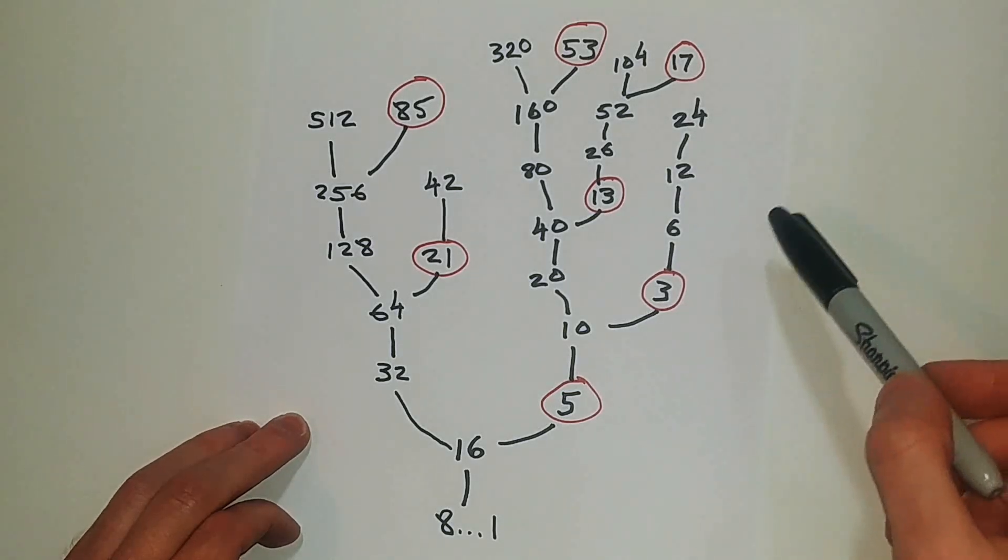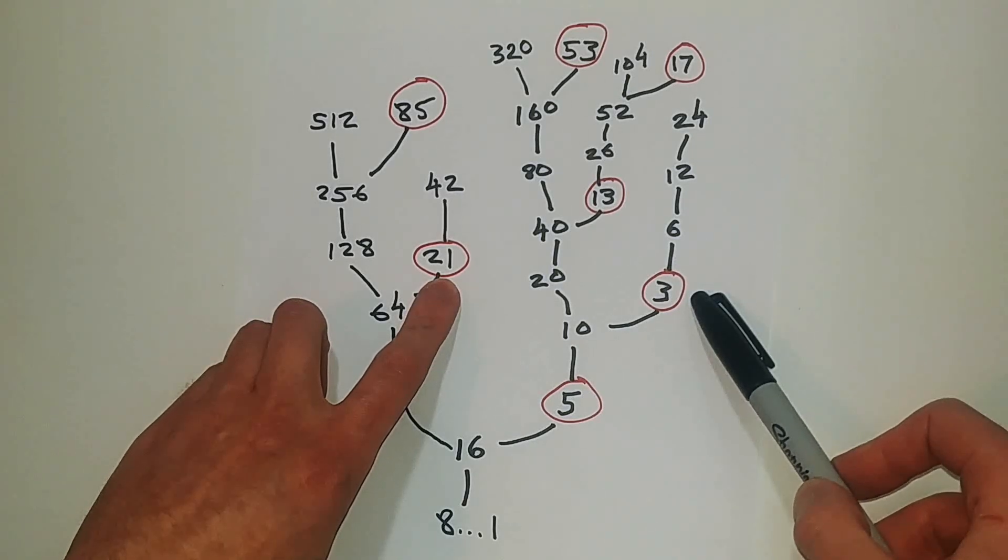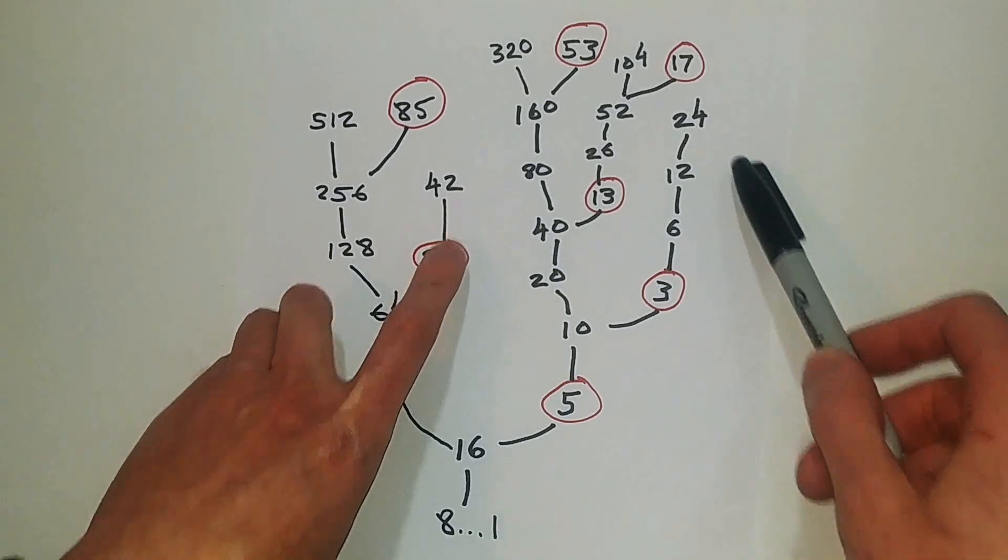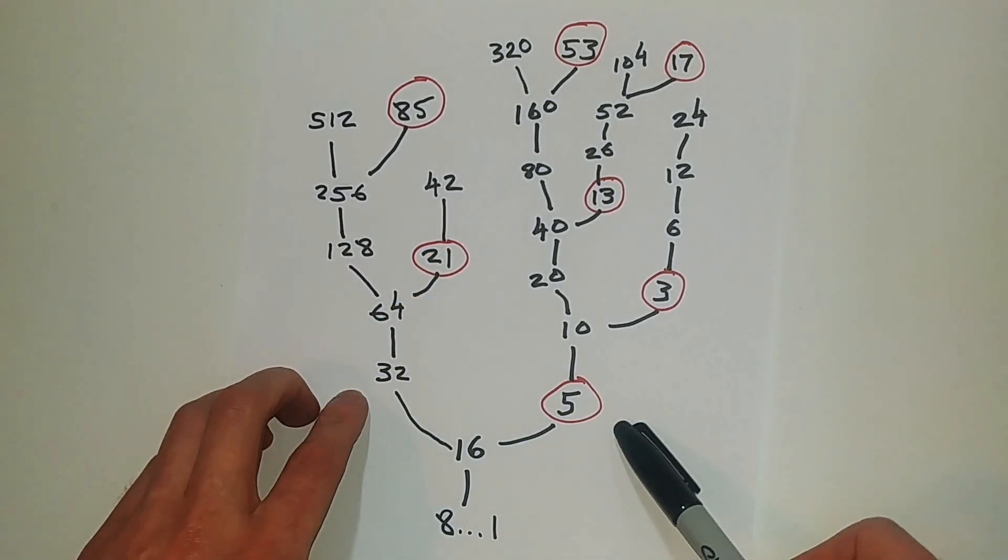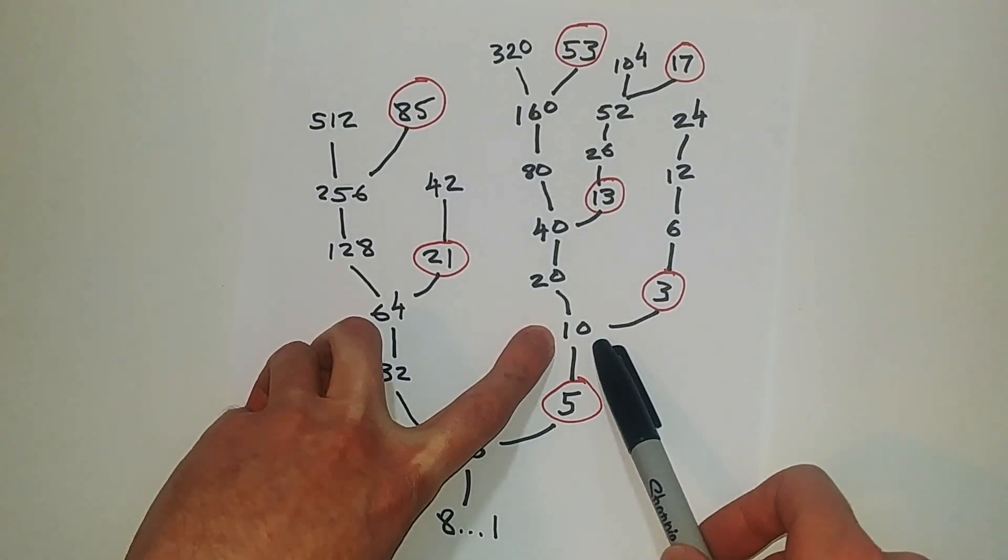Another thing we can notice is that if the starting node is 3, no other odd numbers will branch from it, right? Because if we think about Collatz in reverse, we take an even number, subtract 1, and divide it by 3.